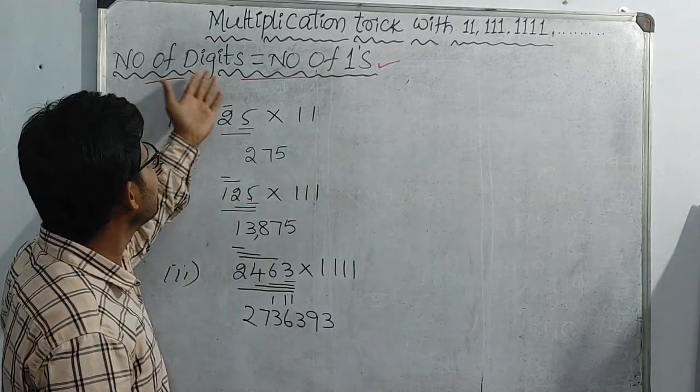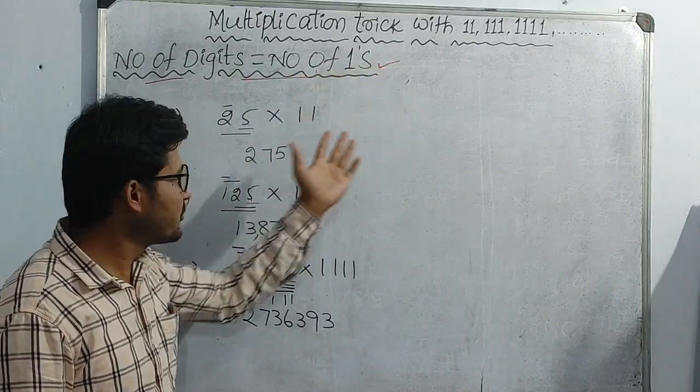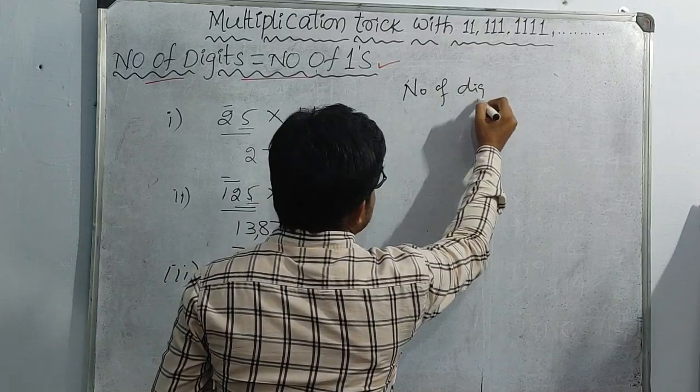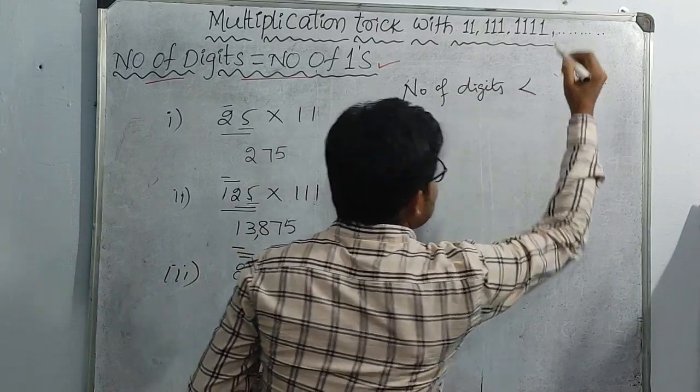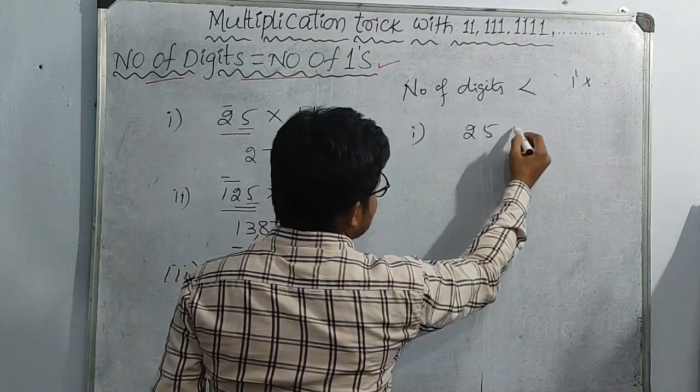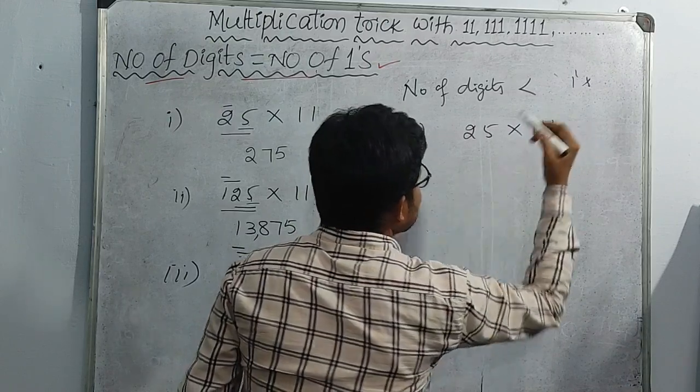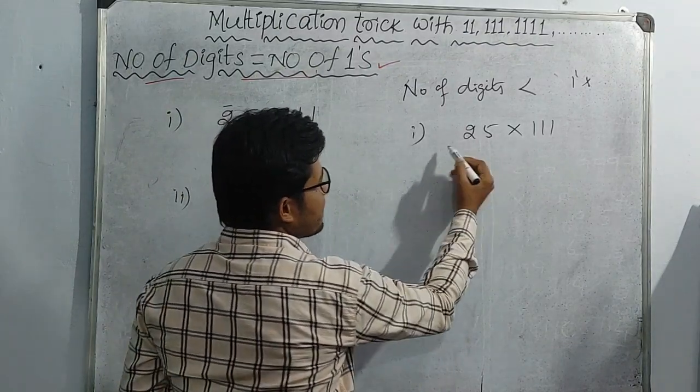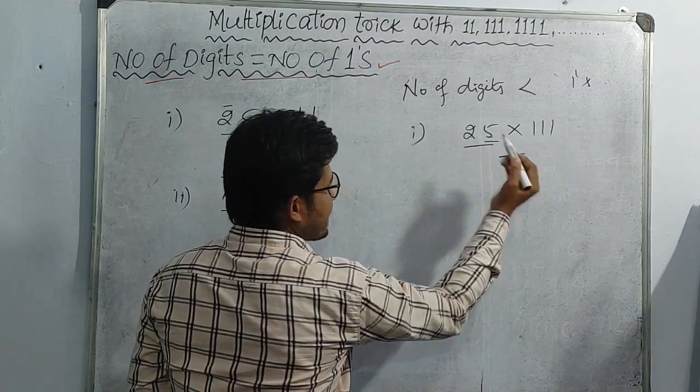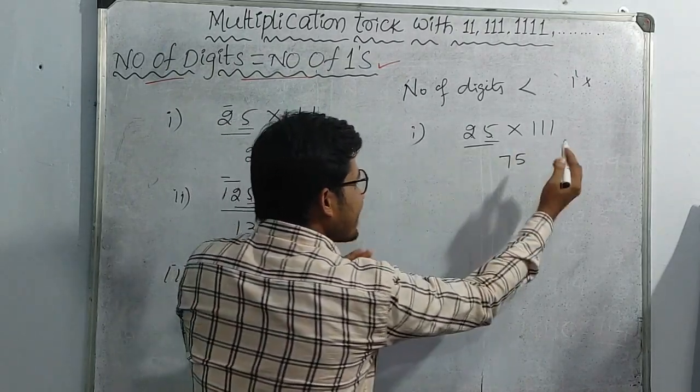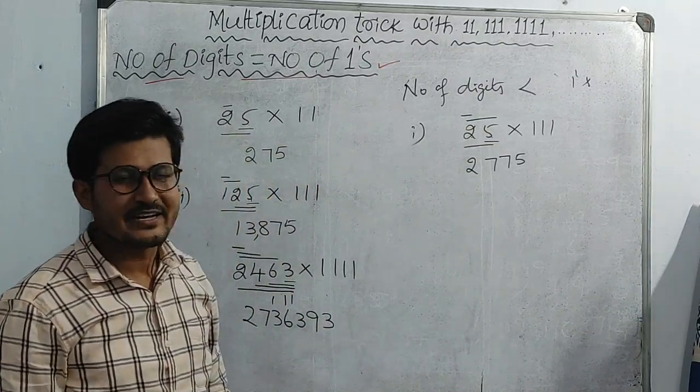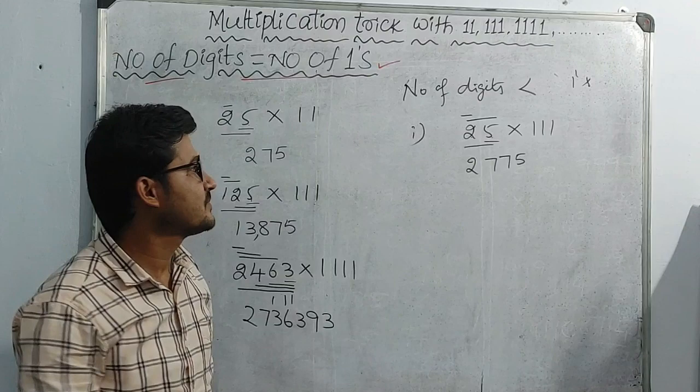Number of digits equals number of 1s. Now let's see when number of digits is less than number of 1s. For example, 25 into 111. From right to left: 5 remains, 5 plus 2 equals 7. From left to right: 2 plus 5 equals 7, then 2 remains. So 25 into 111 is 2,775.